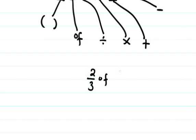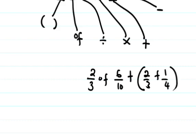So we have 2/3 of 5/10 plus (2/3 + 1/4). That's how we apply BODMAS.